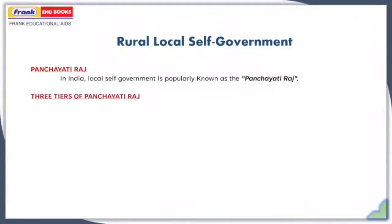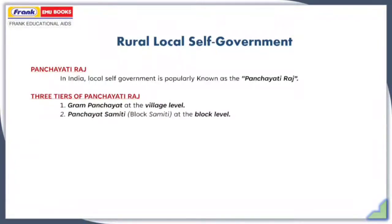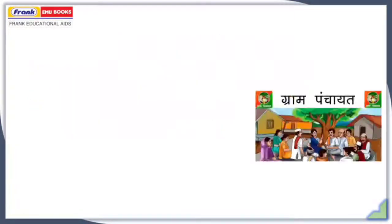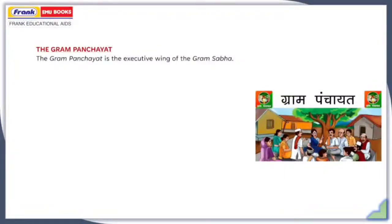Panchayati Raj has three tiers: Gram Panchayat at the village level, Panchayat Samiti at the block level, and Zilla Parishad at the district level. Many Gram Panchayats together form the Panchayat Samiti, and many Panchayat Samitis together form the Zilla Parishad at the district level. Now let's talk about the Gram Panchayat.